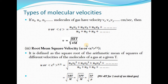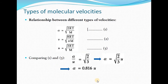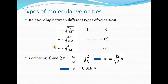These mathematical expressions will be used in numericals to calculate the different types of velocities. Now, the relationship between these three velocities — where alpha is the most probable velocity, v is the average velocity, and U is the root mean square velocity — dividing equation 1 by equation 3, we get alpha/U = √(2/3), giving alpha = √(2/3) · U, or alpha = 0.816 U. This is the relation between most probable velocity and root mean square velocity.